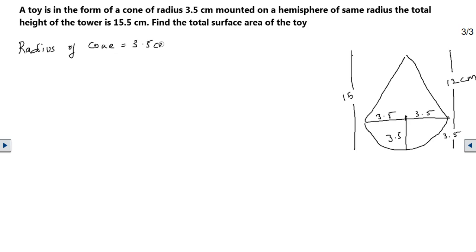Let me write down what's required. Radius of the cone is 3.5 centimeters, and height of the cone is 15.5 minus 3.5, which is 12 centimeters. Radius of the hemisphere is again 3.5.